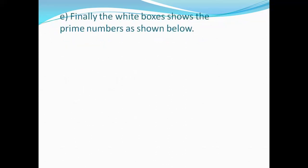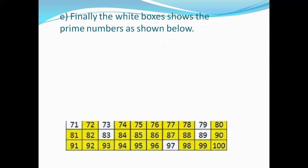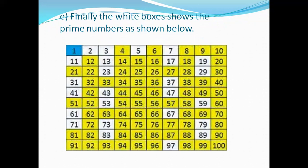Finally, the white boxes show the prime numbers, and the rest of the numbers are highlighted in yellow. The number 1 is shown in blue because it is neither prime nor composite. Thank you.